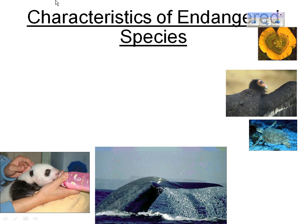Some characteristics of endangered species and things humans can do to help. The main reason animals become endangered or extinct is due to loss of habitat. Protecting animals' habitat is the best way to keep them from becoming extinct — that is in-situ conservation. Ex-situ conservation is when we take an animal or plant out of its natural habitat and breed it in captivity, like a zoo or aquarium, or for plants, seed banks.